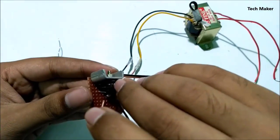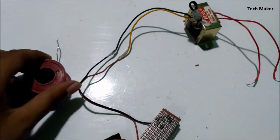Now solder the positive and negative wires of the transformer to the PCB according to the circuit.